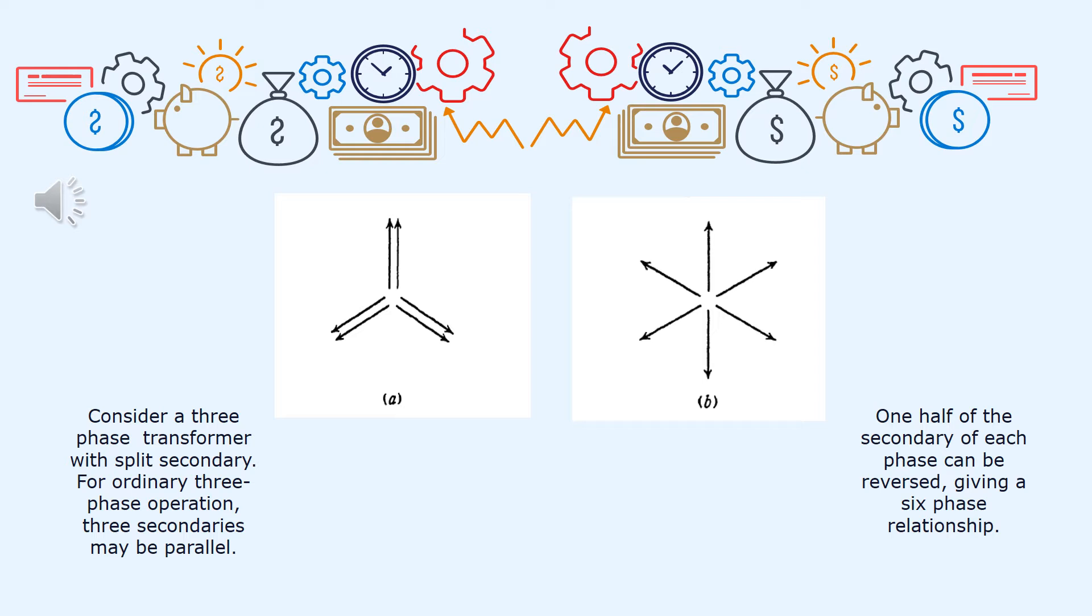Six-phase transformation or connection is also considered as a three-phase transformer or three single-phase transformers with split secondaries. For ordinary three-phase operation, three secondaries may be paralleled as shown in Figure A. On the other hand, one half of the secondary of each phase can be reversed giving a six-phase relationship as shown in Figure B.